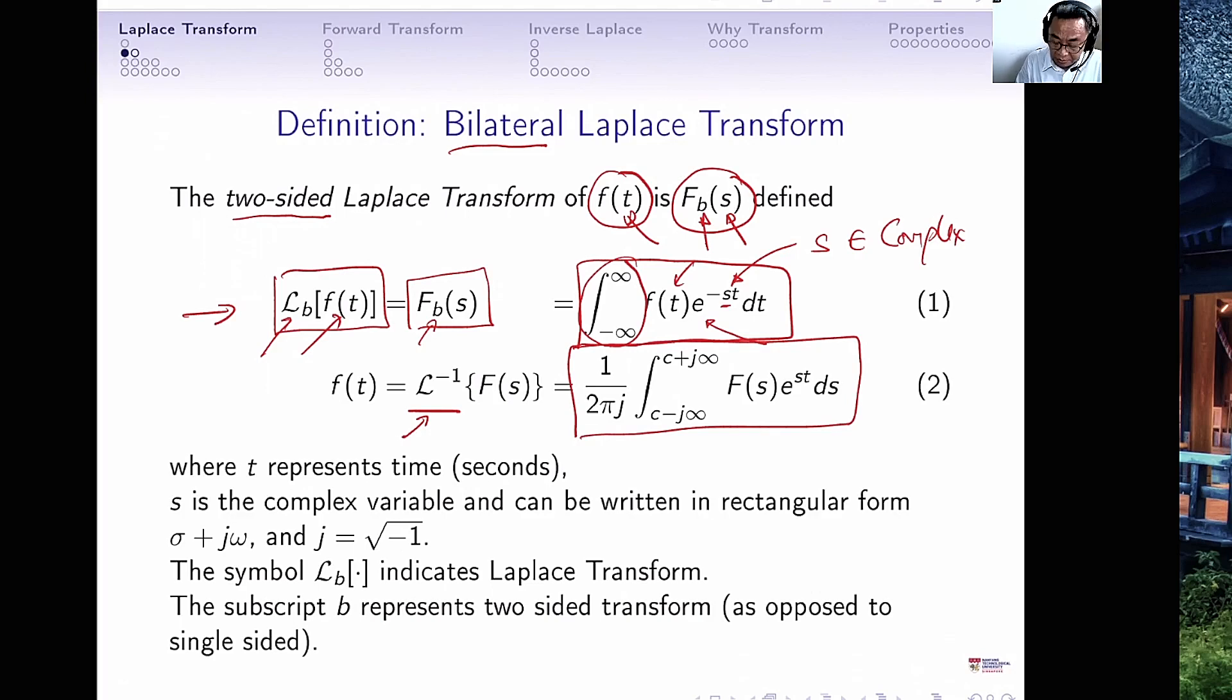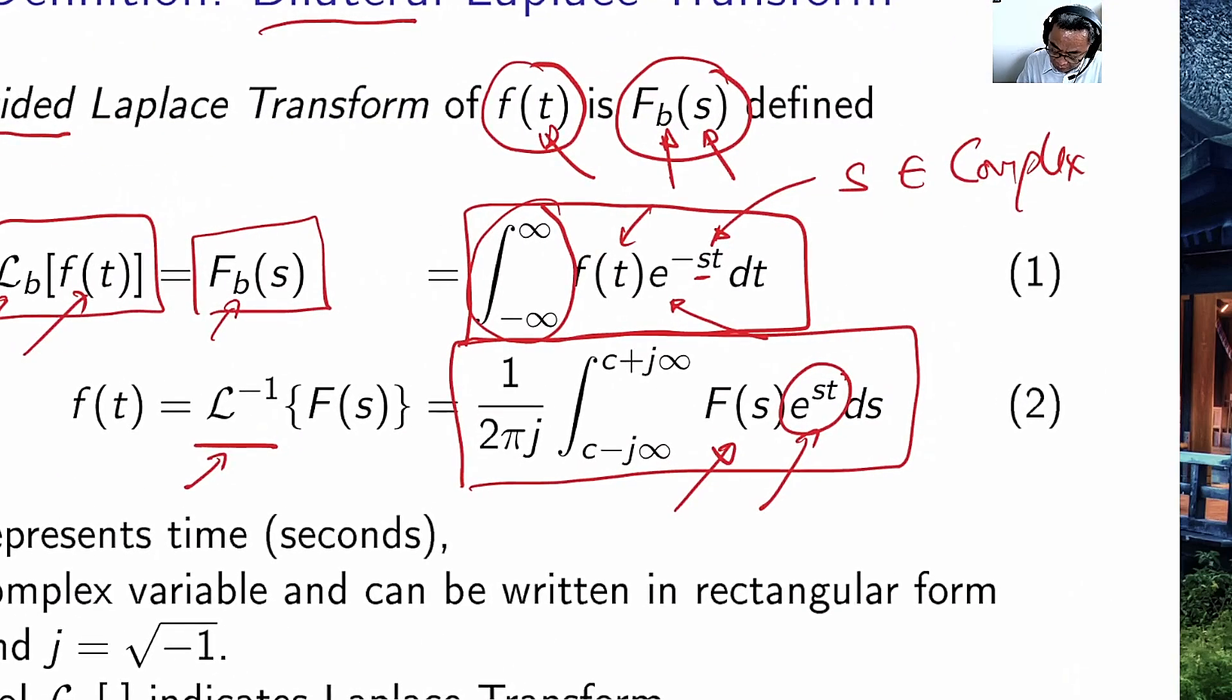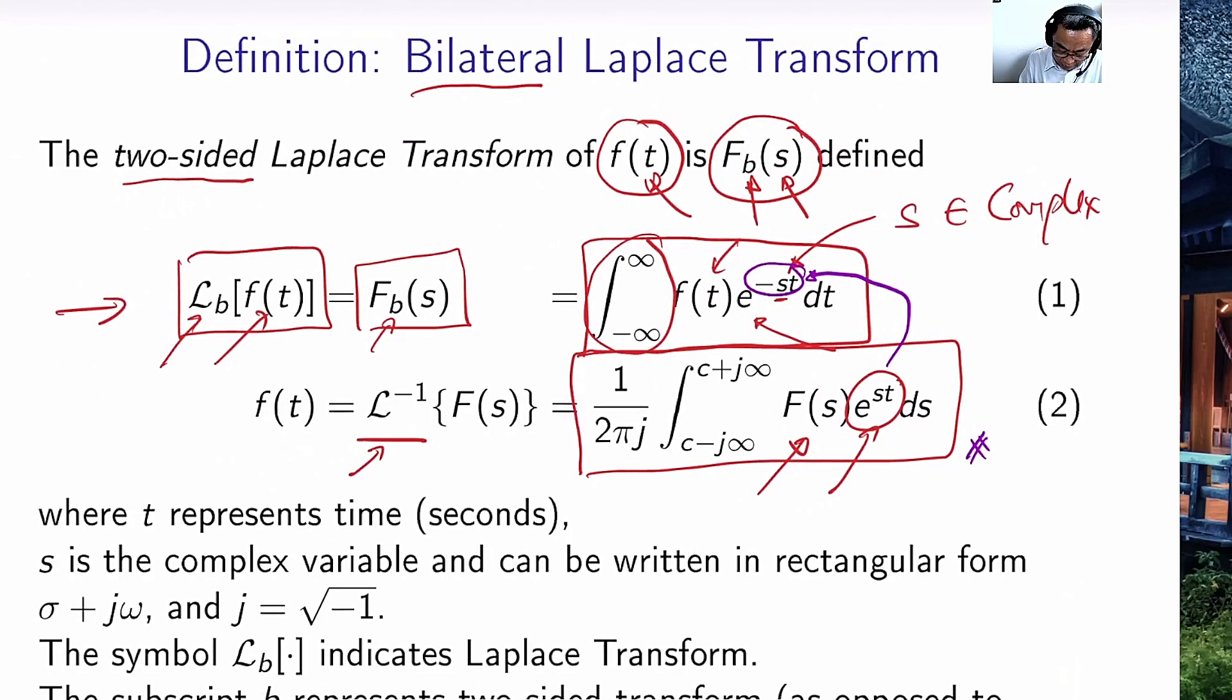But what happens in this inverse Laplace transform is this. It takes the representation in s, multiplied by e^(st). Notice the difference. Here is e^(st). Well, on top, it is actually a different variable, -st on top. We can perform this integration in the complex plane, and then we will get f(t) back.